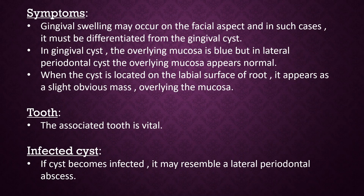Symptoms: Gingival swelling may occur on the facial aspect, and in such cases it must be differentiated from the gingival cyst. In a gingival cyst, the overlying mucosa is blue, but in a lateral periodontal cyst, the overlying mucosa appears normal. When the cyst is located on the labial surface of the root, it appears as a slightly obvious mass overlying the mucosa. The associated tooth is vital. If the cyst becomes infected, it may resemble a lateral periodontal abscess.